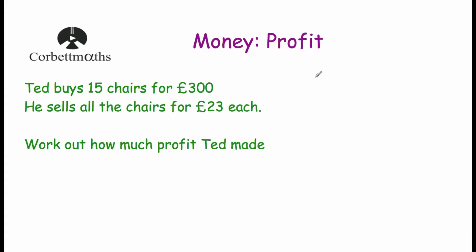When some money has been made, the profit is what's left after the costs have been subtracted from it. So for instance, if a chair costs £15 and it was sold for £20, then the profit would be £5 because £5 had been made — that's the profit.